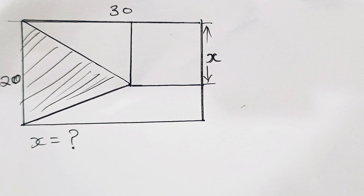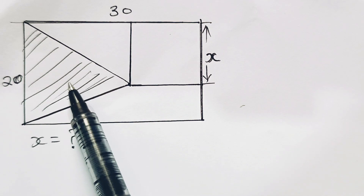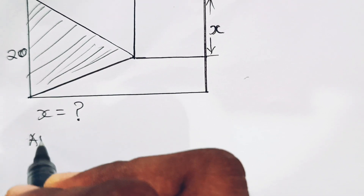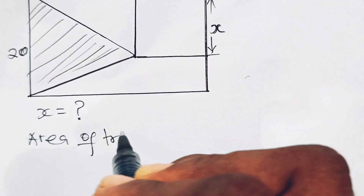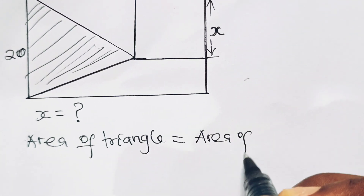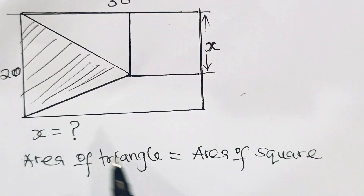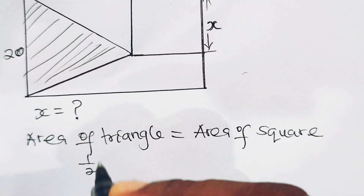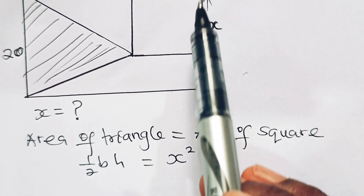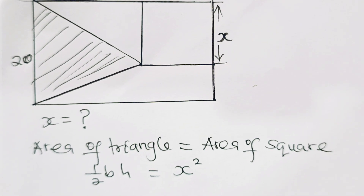First of all, let us read the mind of the examiner — why did the examiner give us the condition that the area of this triangle equals the area of the square? We start from: area of triangle is equal to area of square. Remember that area of a triangle is half base times height, and area of a square is x squared, where the side length is x.